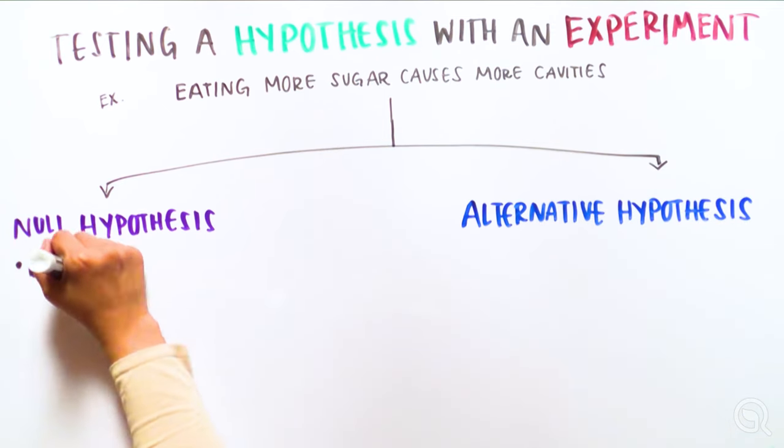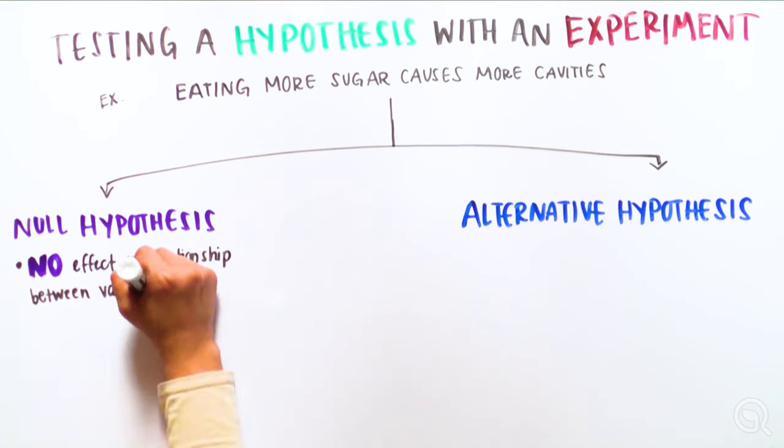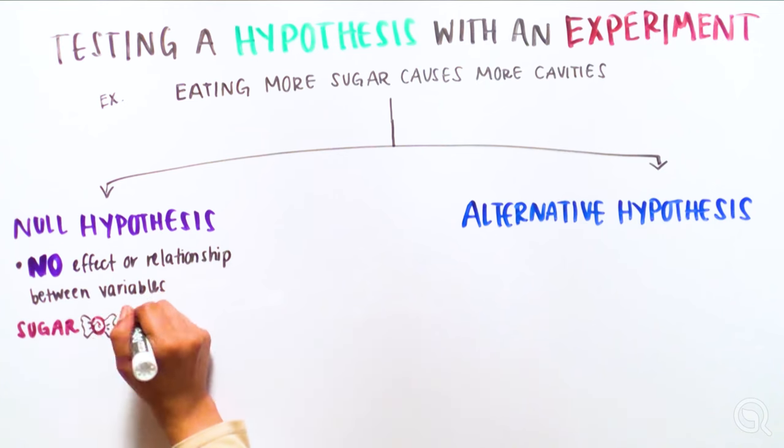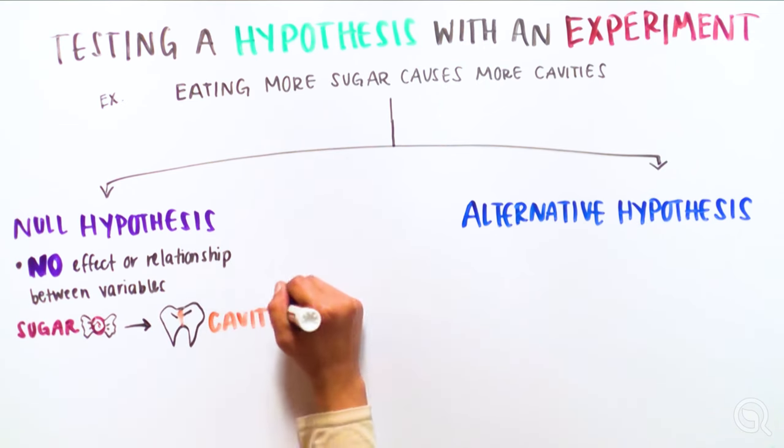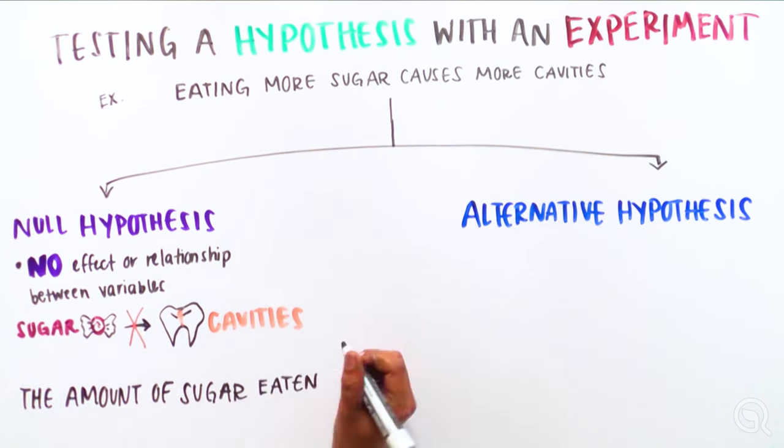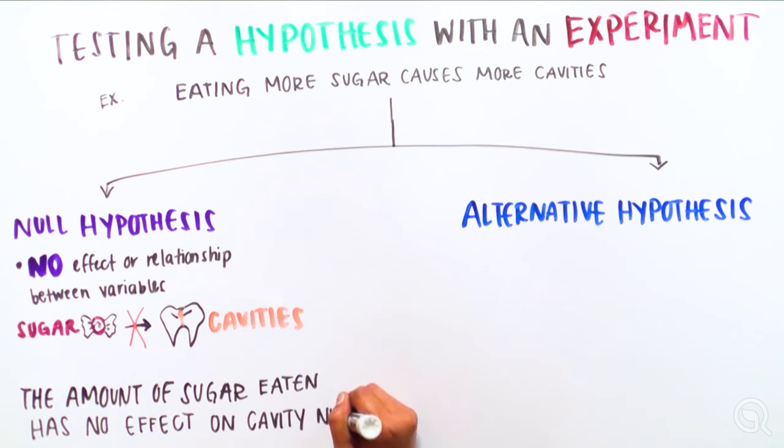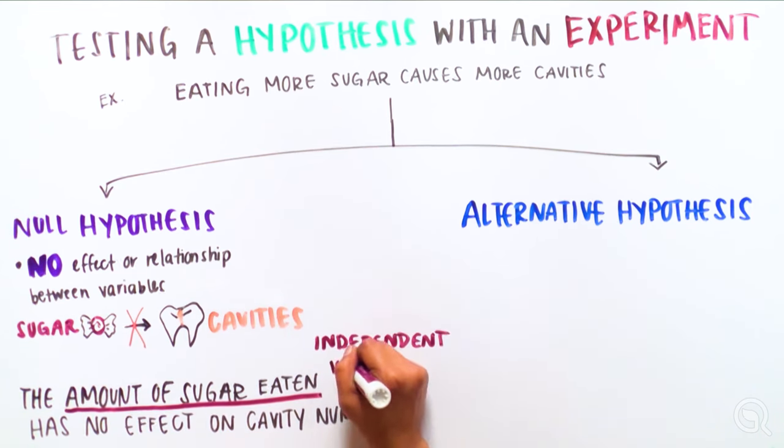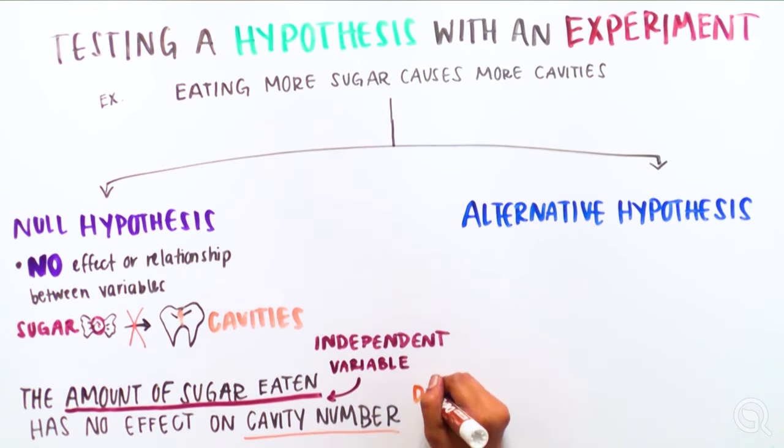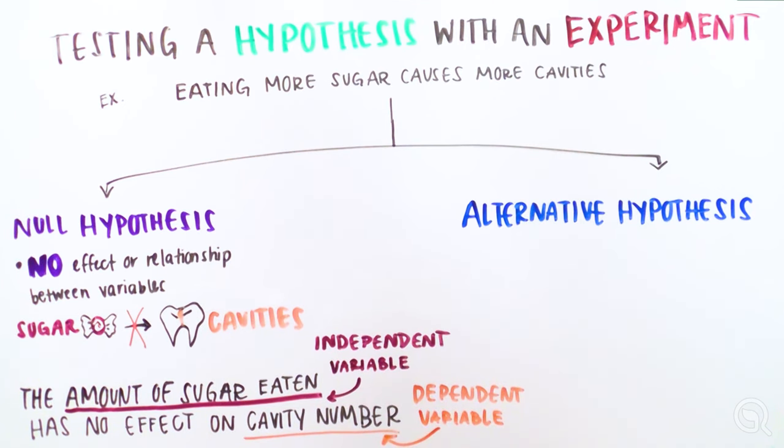The null hypothesis predicts there is no effect or relationship between the two variables being tested. In this case, our null hypothesis is that the amount of sugar eaten, the independent variable or what we can change during an experiment, has no effect on the number of cavities, the dependent variable or what we measure during the experiment.